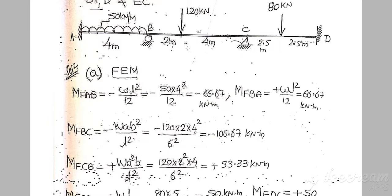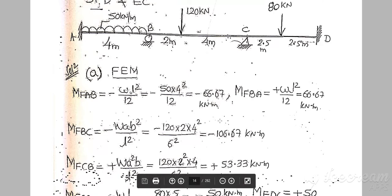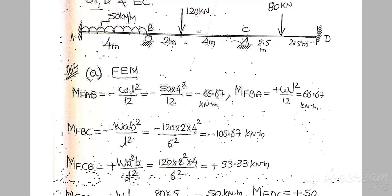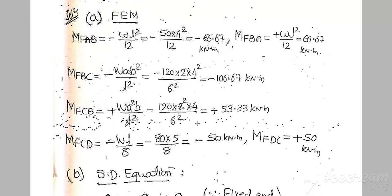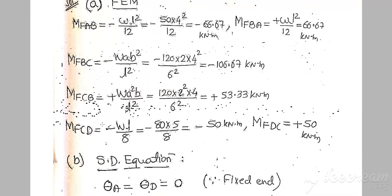Substitute the given values: W is 120, A is one portion of the span, B is 4 meters, and L is the total length of span BC which is 6. Substitute and calculate the answer, keeping the proper units.